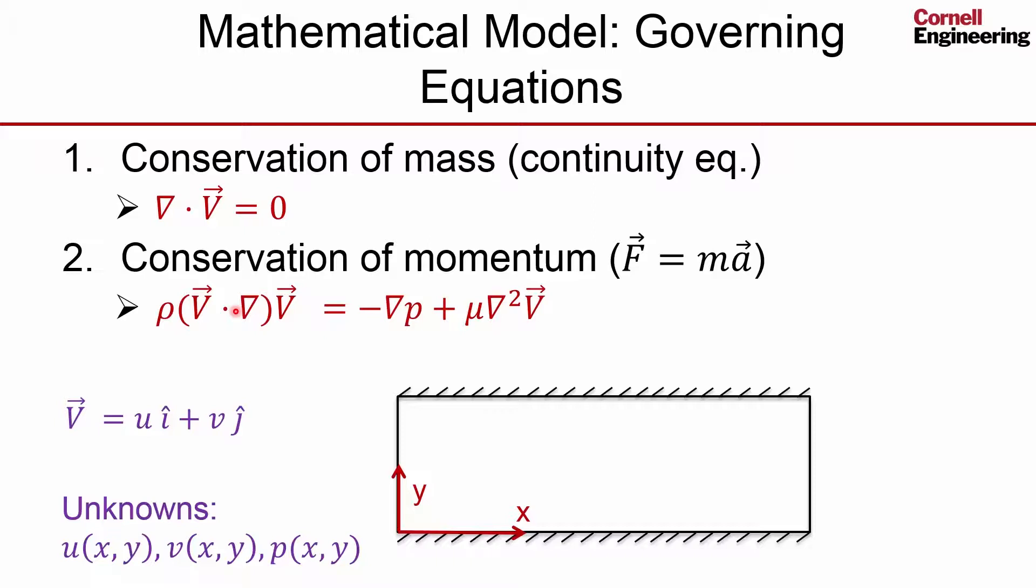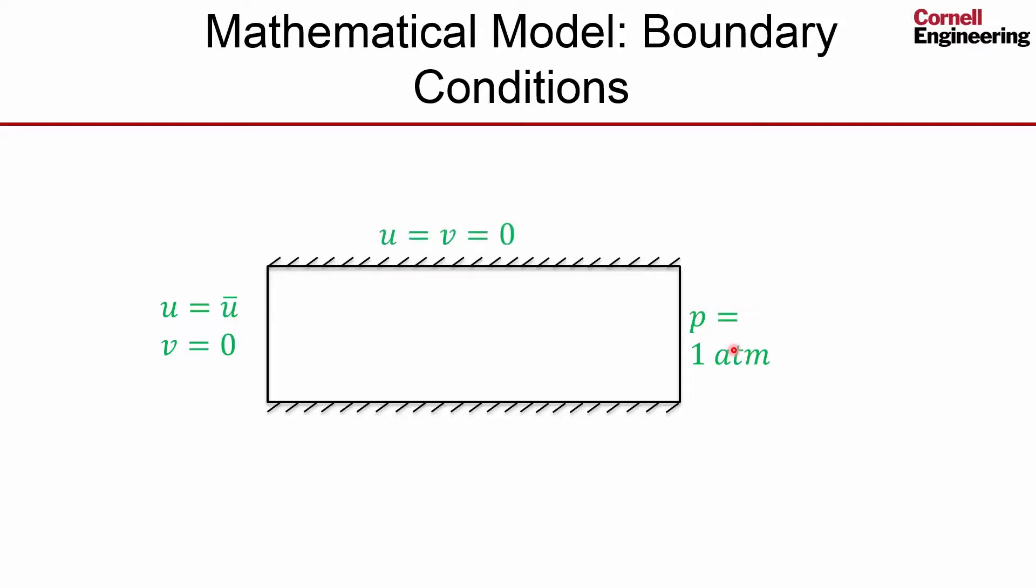That completes the governing equations. Let's talk about the boundary conditions. The boundary conditions are defined at the edges of the domain. At the left boundary we have specified the velocity, so that's velocity in the x direction some specified value, the velocity in the y direction is zero. At the outlet we have the pressure, and that can be, you know, one atmosphere. The exact value doesn't matter. At the top boundary we have both components of velocity equal to zero, that's a no-slip condition, and similarly at the bottom boundary. So we have three velocity boundary conditions and one pressure boundary condition. That completes the definition of the mathematical model.